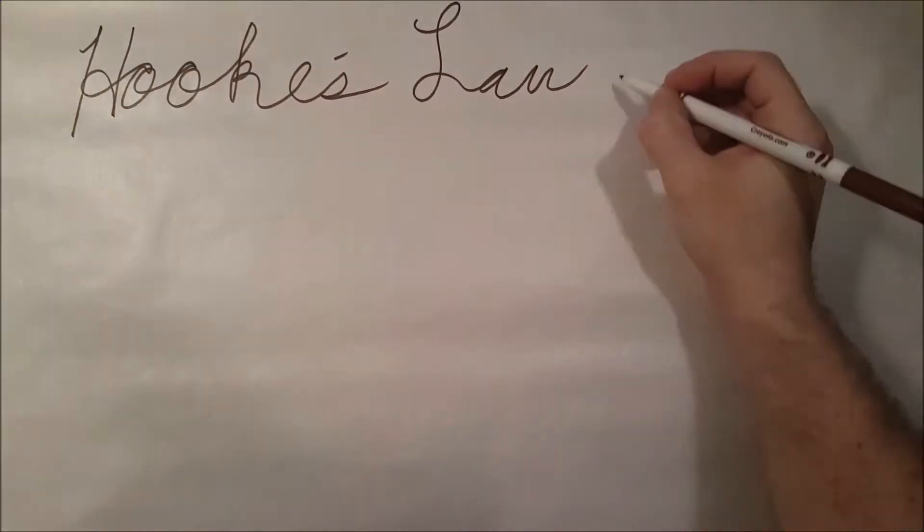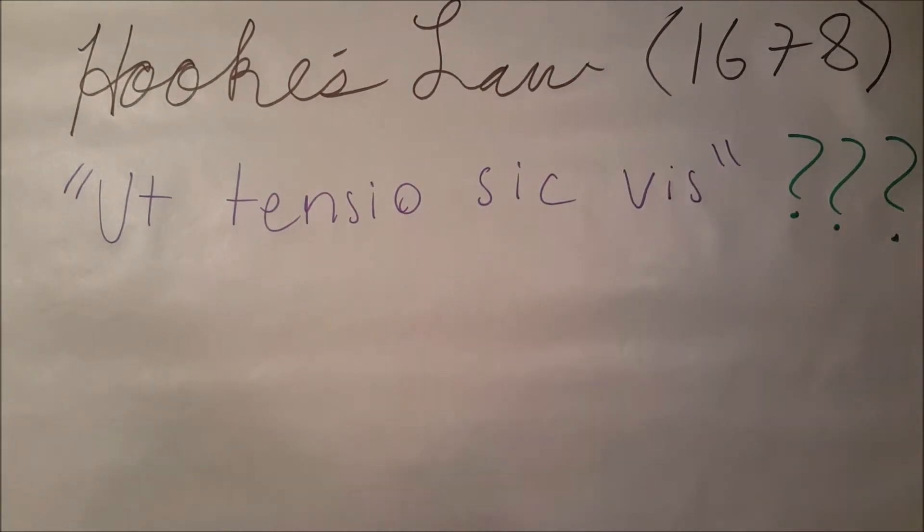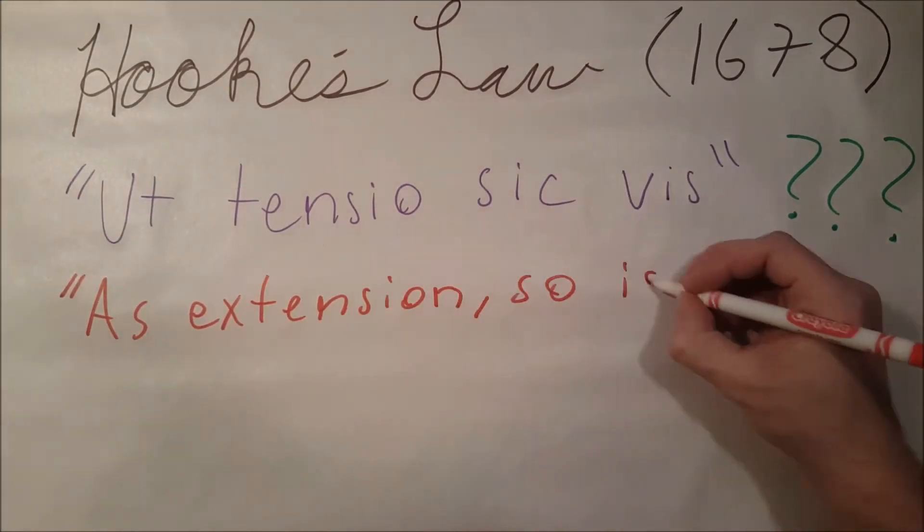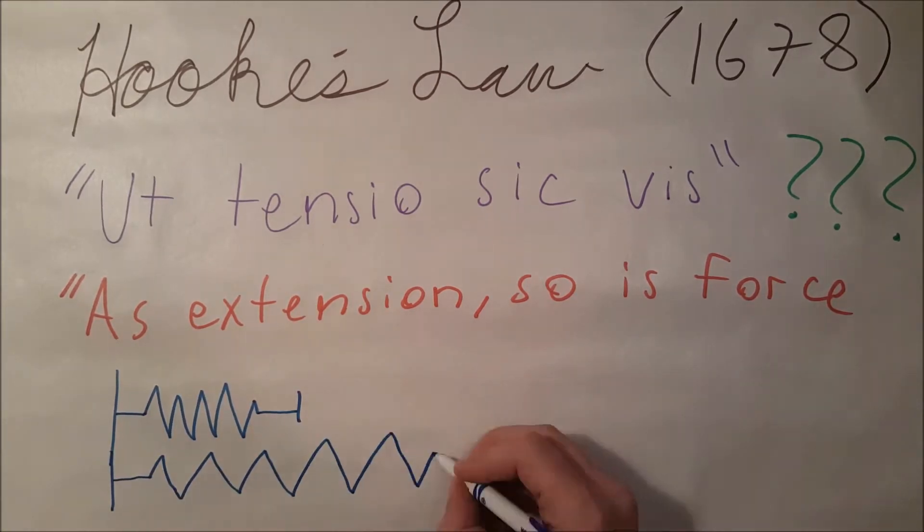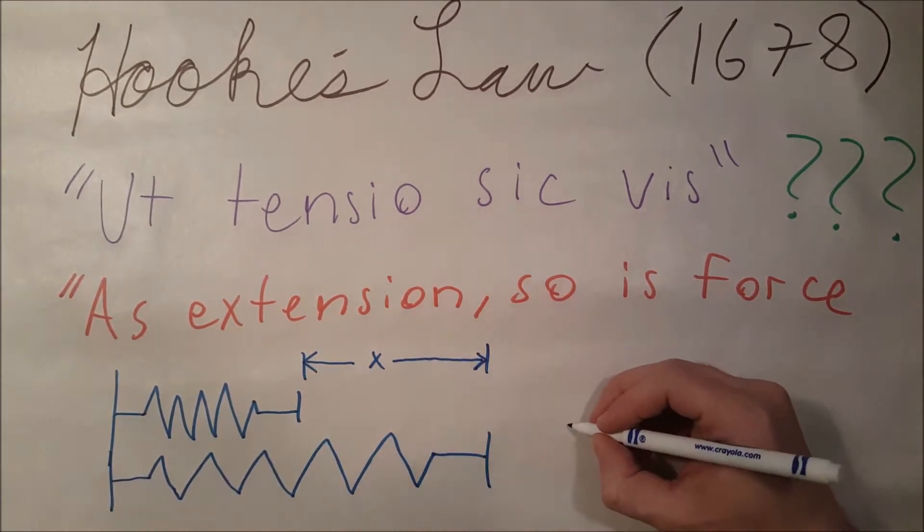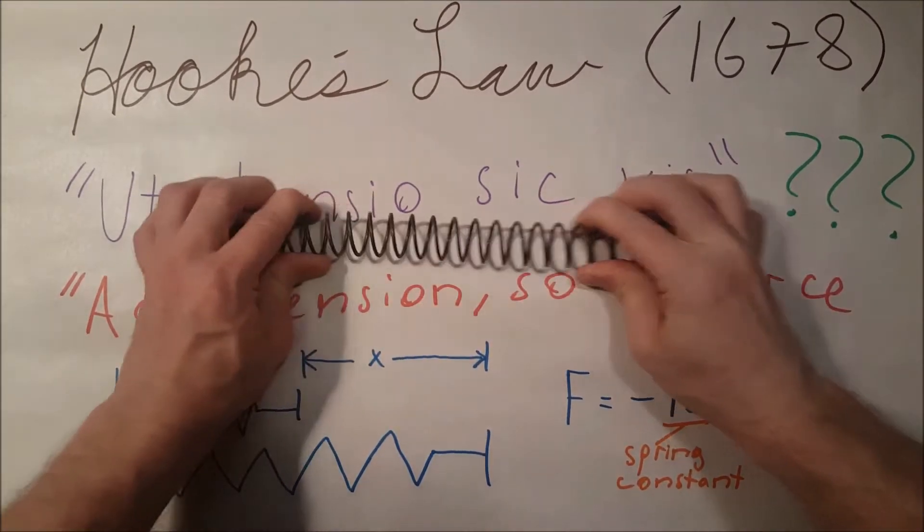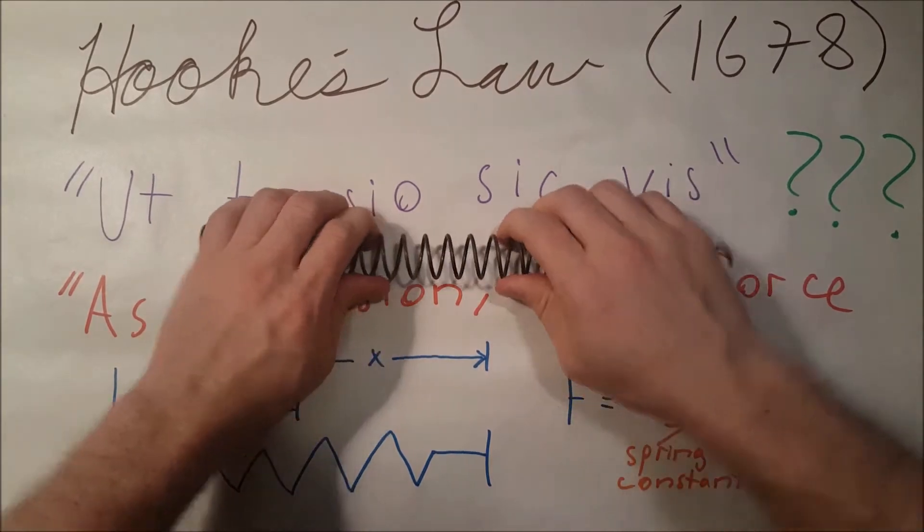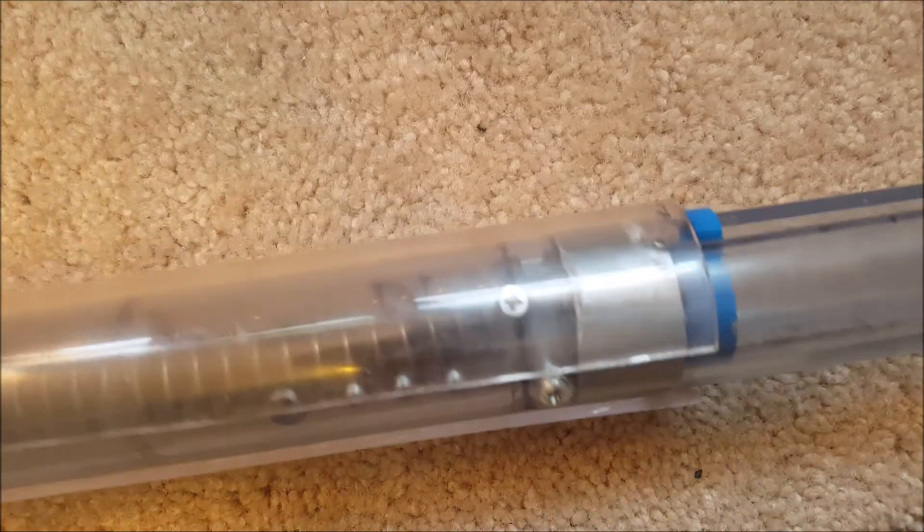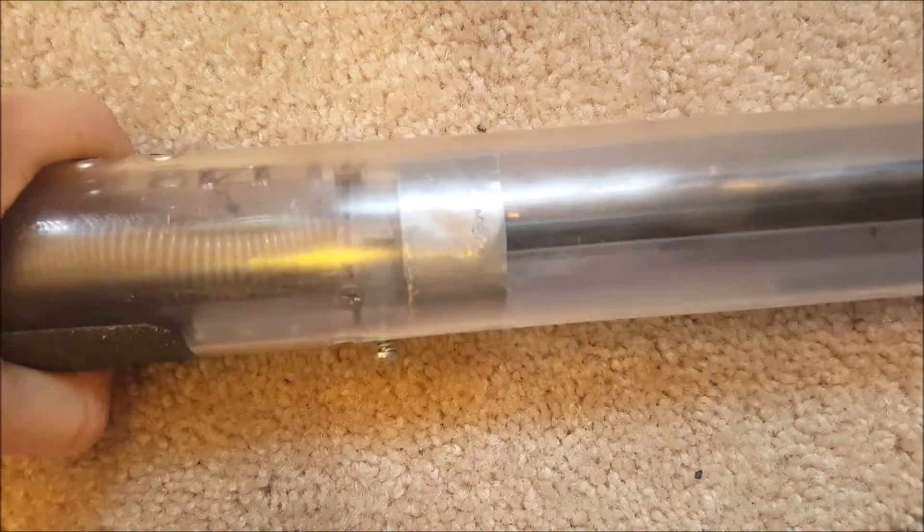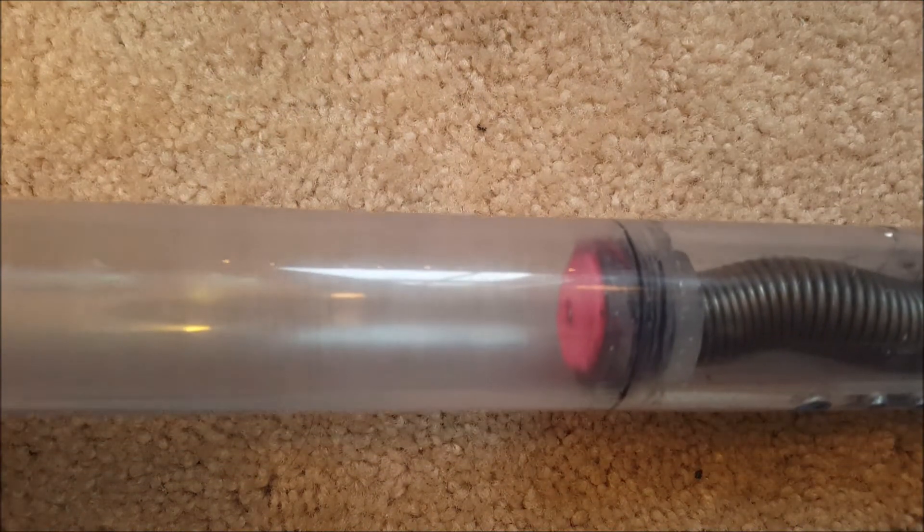The force that we're going to be using for the spring has to do with Hooke's law: Utensio sic Vis. What does this mean? As extension, so is force. The force that is exerted on a spring is proportional to its extension, and we can write that as this equation where x is the spring extension and k is the constant of the spring in force per distance. The negative is there to denote extension versus compression. Here you can see it in action—when we push this back, the spring is compressed, and that is our driving force.